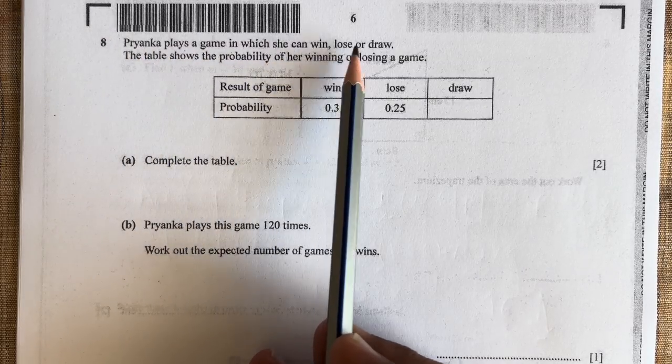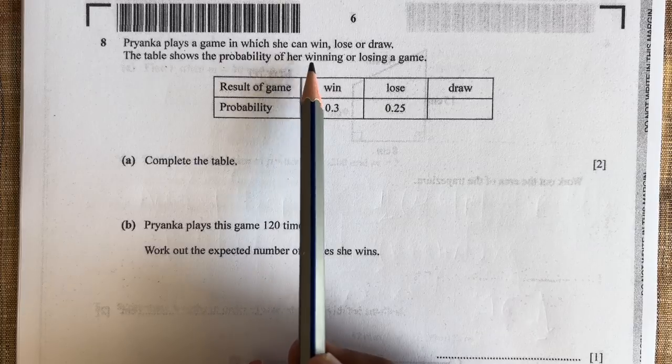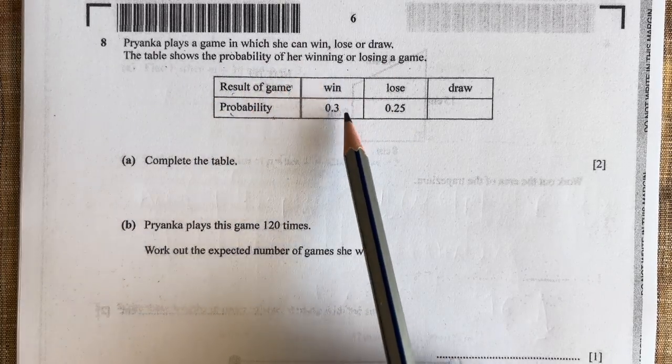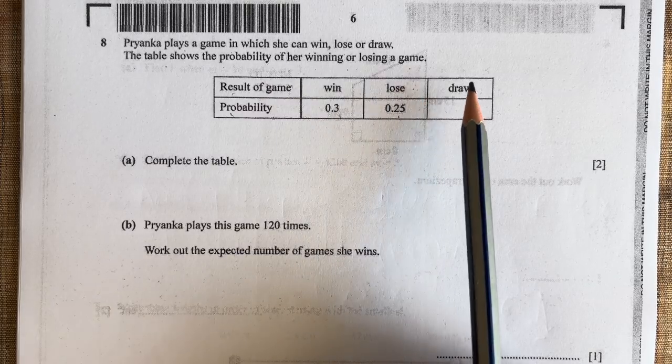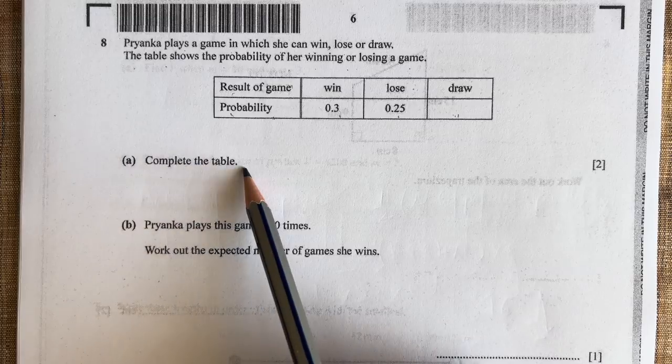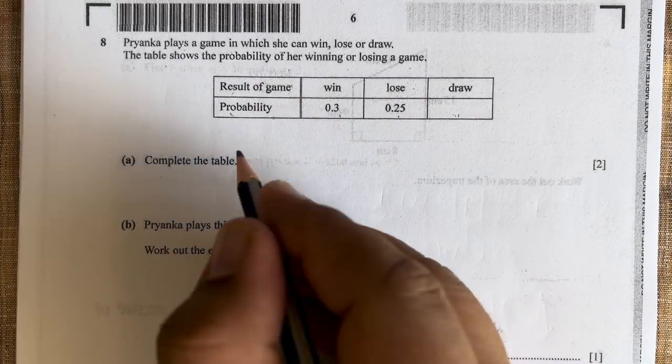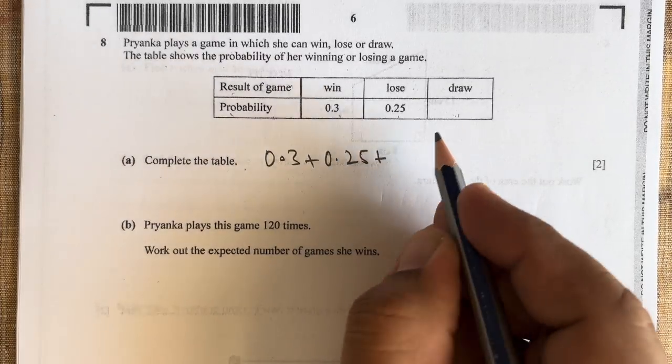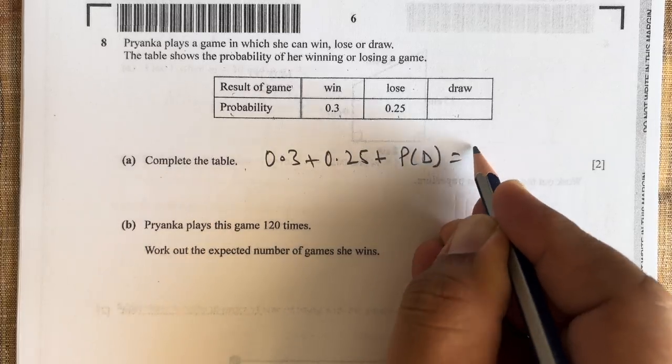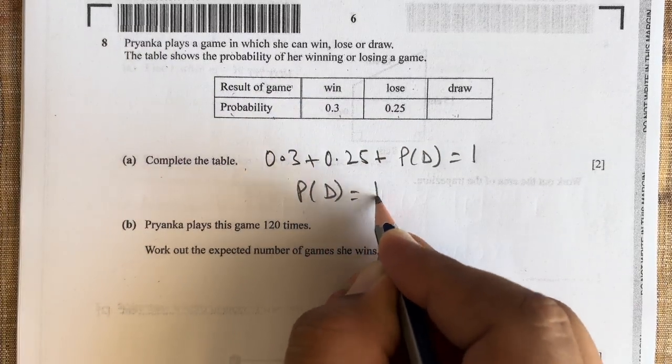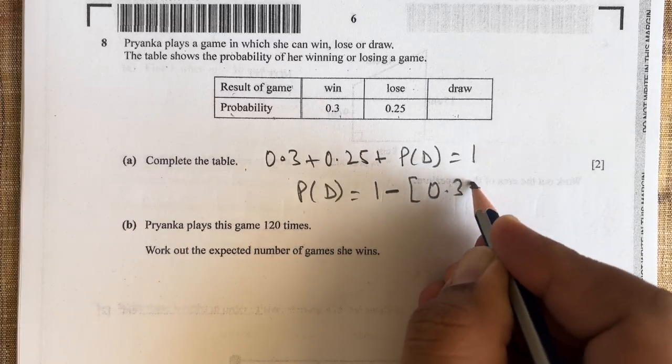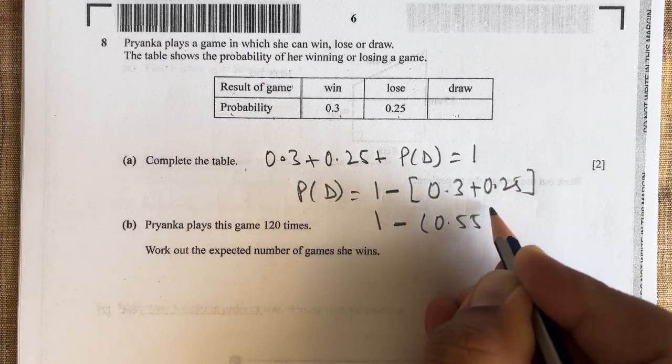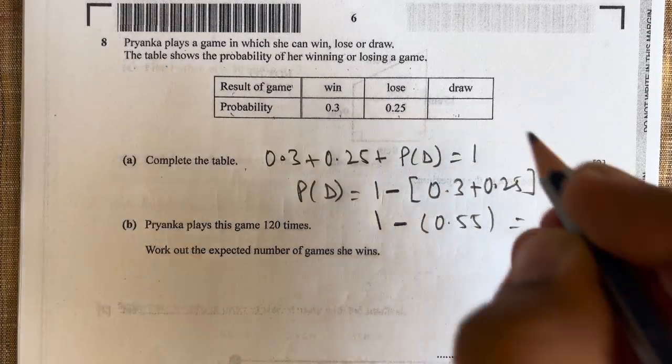Priyanka plays a game in which she can win, lose, or draw. The table shows the probability of her winning or losing the game. Win is 0.3, lose is 0.25, and we have to find the probability of draw. We know that the sum of probabilities is 1, so 0.3 + 0.25 + P(draw) = 1. Probability of draw = 1 - 0.55 = 0.45.